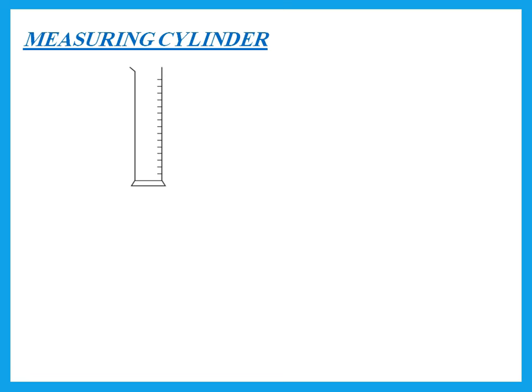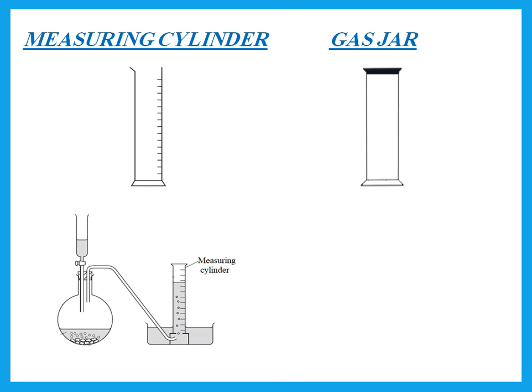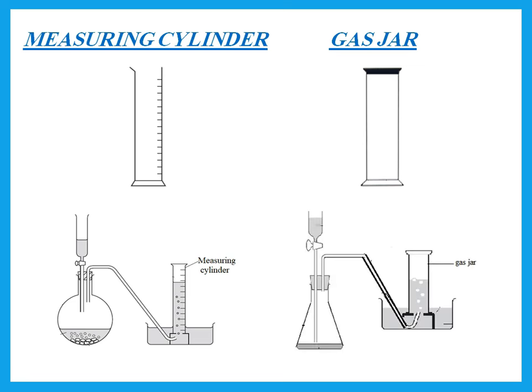This is a measuring cylinder. If it has graduations, it's a measuring cylinder. Remember, a measuring cylinder is not accurate, so we use it when measuring volumes of about something — for example, about 35 cm³. But if we're trying to measure exactly 35.0, we don't use a measuring cylinder. Something very similar but with no graduations is a gas jar — when collecting gas in that container with no graduations, it's a gas jar.